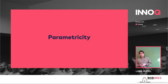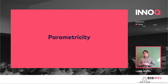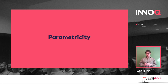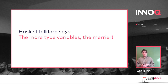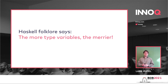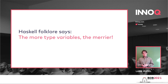What is parametricity? There's some mathematics left in this talk but by far not as detailed as before — those interested in the nitty-gritty details can read the paper by John Reynolds. I'm going to focus now on what we do as Haskell programmers. Haskell's folk wisdom says: the more type variables, the merrier. If you can abstract away some concrete types and replace them with type variables, you should do that. But do we actually understand why we say this?